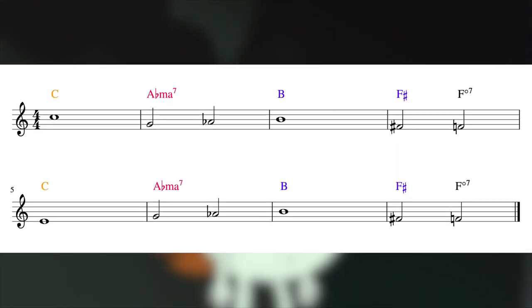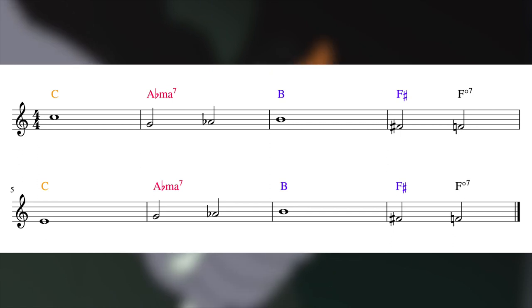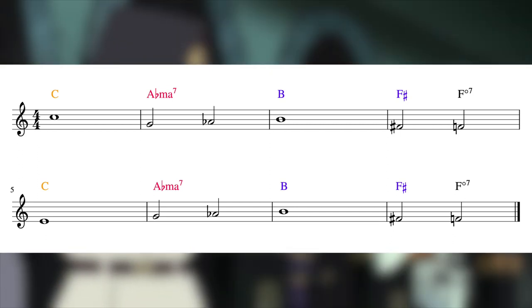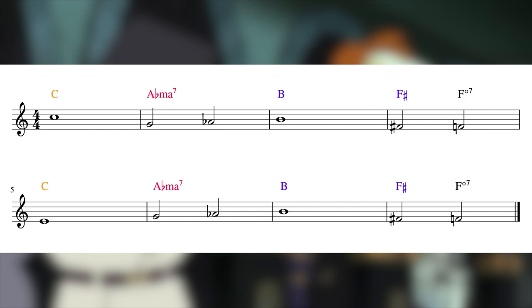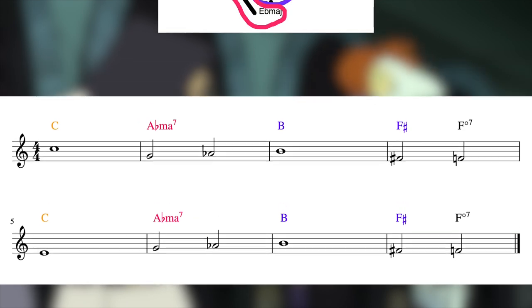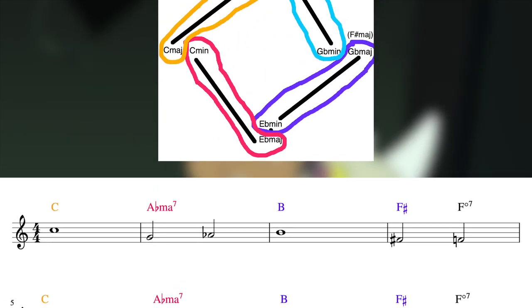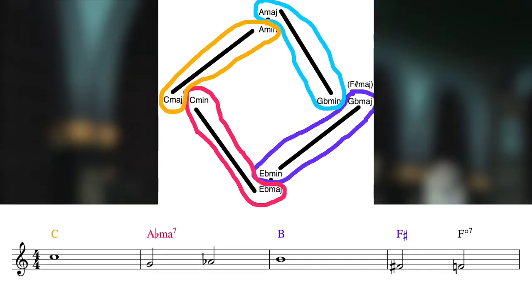Most other tunes that have this parallel major-minor interplay use the major chord resolution as parallel modal interchange in a minor key. This tune, however, uses axis interchange and jumps to three different sides, each time moving counterclockwise along the axis.